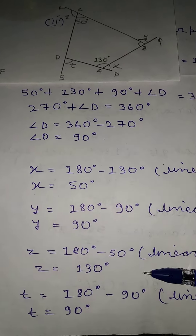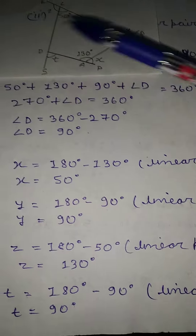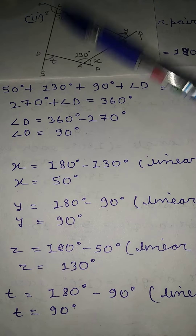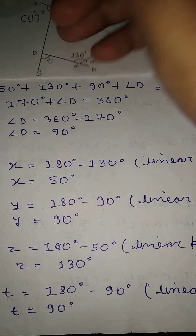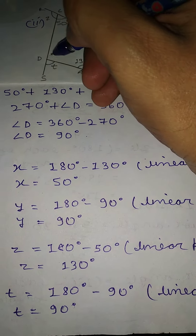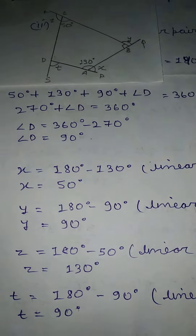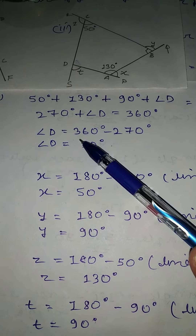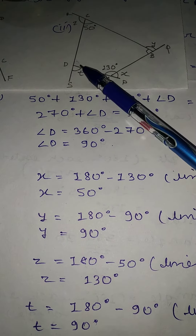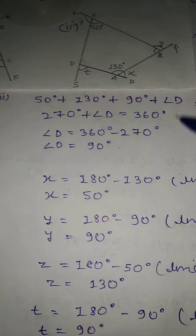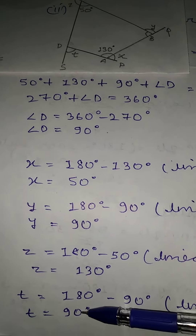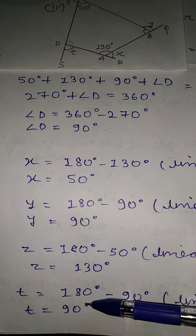Finally, t is also a linear pair. We already obtained the value of angle D, which is 90 degrees, so the value of t is equal to 180 minus 90 degrees, which means t is equal to 90 degrees.